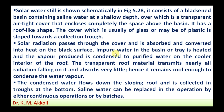Solar radiation passes through the cover and is absorbed and converted into heat on the black surface. The impure water in the basin or trays is heated and vapor is produced, which condenses to purified water on the cooler interior of the roof. The transparent roof material transmits nearly all radiation falling on it and absorbs very little — hence it remains cool enough to condense the water vapor.